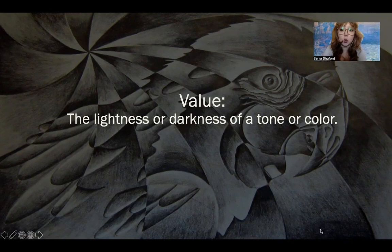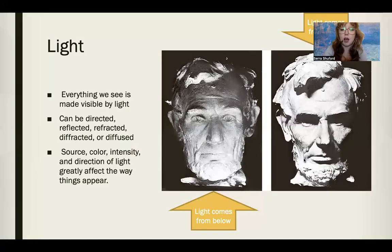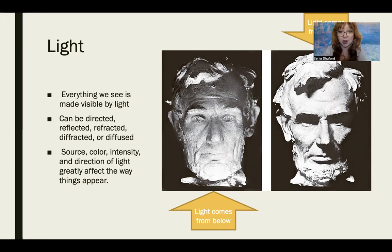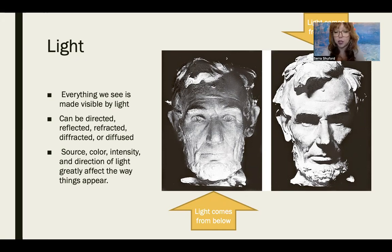Value is the lightness or darkness of a tone or a color. Light is maybe one of the most important elements because everything we see is made visible by light. Light will change the nature of pretty much everything we encounter in our day-to-day life. Imagine you're in whatever room you're in right now with no windows, no technology with light — just a totally pitch black dark room. You wouldn't have any understanding of the objects that were previously illuminated by light.